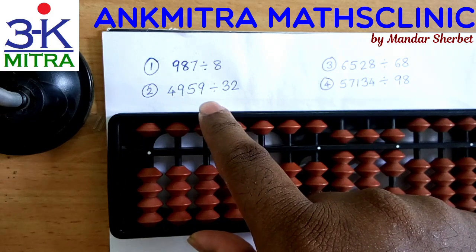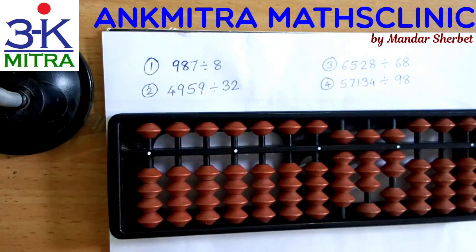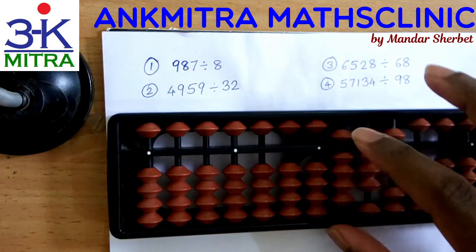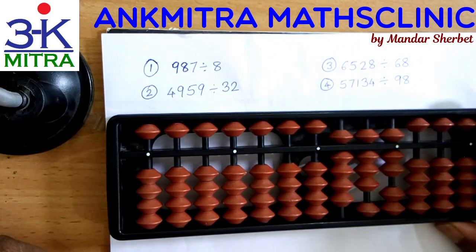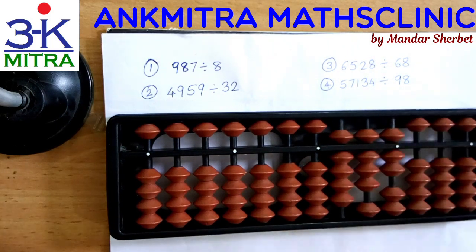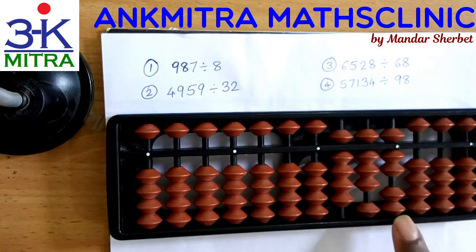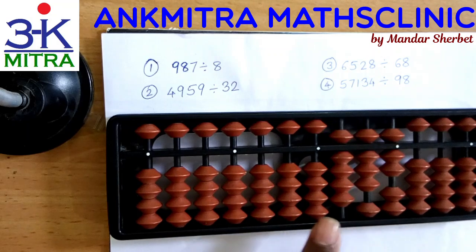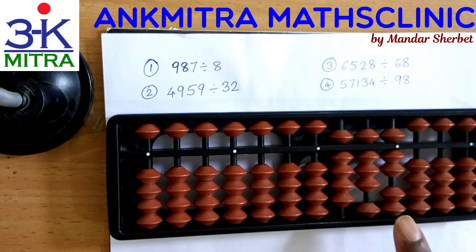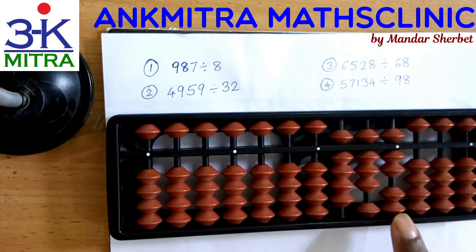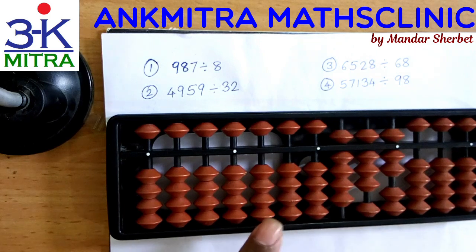Let's focus on these two examples for this video. The first example is 987 divided by 8. This is the unit's place for our question set and this is the unit's place for our answer set. I have taken 987 ending with the 7 on the unit's place, and our answer will start on the third rod of the answer set.